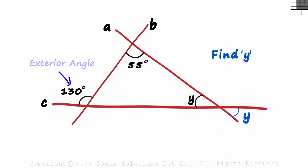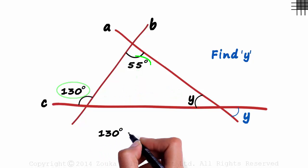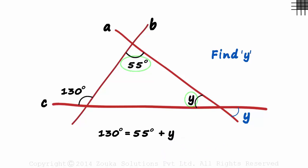Now it's easy. This is an exterior angle, and these two are its interior opposite angles. So 130 degrees will equal 55 degrees plus Y, and we get the measure of Y as 75 degrees.